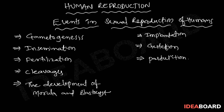Among these, gametogenesis means the formation of gametes. Insemination means the transfer of gametes. Fertilization means the fusion of gametes. Cleavages means the division of the zygote, and the morula and blastocyst are the further stages of the zygote. Implantation means the fixation of the embryo in the wall of the uterus. Gestation means the embryonic development period, and parturition means the process of childbirth.